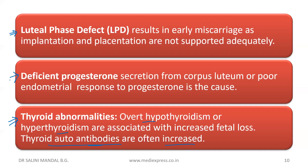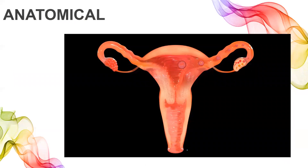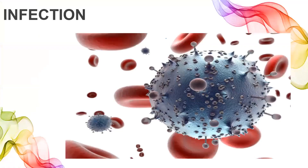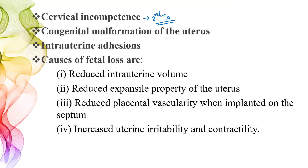Now let's talk about anatomical factors. The first one is cervical incompetence, which is related to second trimester abortion. Under the cervical-uterine factor, cervical incompetence is the first condition. Basically, the internal os should remain closed and not allow any uterine products to come out. But if the retentive power of the cervix or internal os is lost, there will be gradual dilatation of the cervix leading to miscarriage.